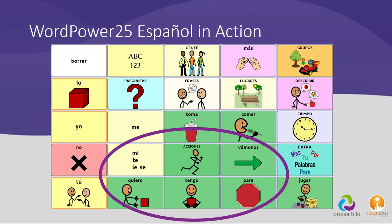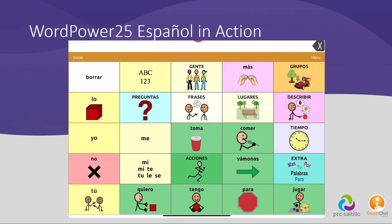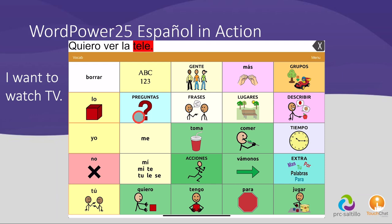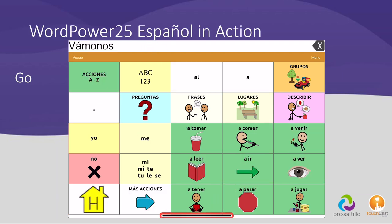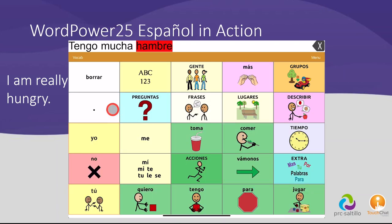You will find frequently used verbs such as 'quiero,' 'tengo,' and other often-used verbs on the main page for quick language generation. You can say things like 'quiero ver la tele,' 'para,' and 'vámonos.' For example: Quiero ver la tele. Para. Vámonos. Tengo mucha hambre.